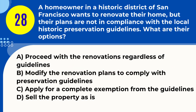Question 28. A homeowner in a historic district of San Francisco wants to renovate their home, but their plans are not in compliance with the local historic preservation guidelines. What are their options? A. Proceed with the renovations regardless of guidelines. B. Modify the renovation plans to comply with preservation guidelines. C. Apply for a complete exemption from the guidelines. D. Sell the property as is. Answer: B. Modify the renovation plans to comply with preservation guidelines. Explanation: Homeowners in historic districts in California must ensure that their renovation plans comply with local historic preservation guidelines, potentially requiring plan modifications.